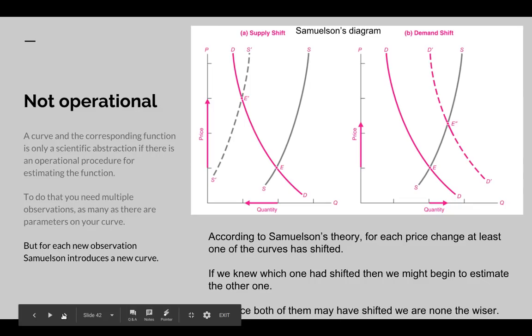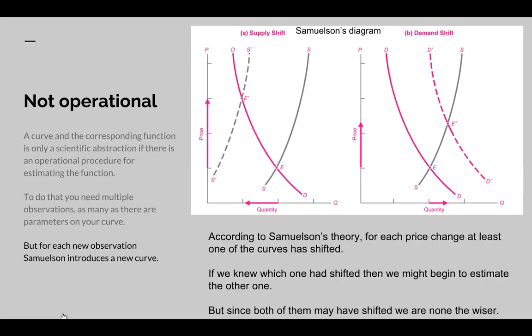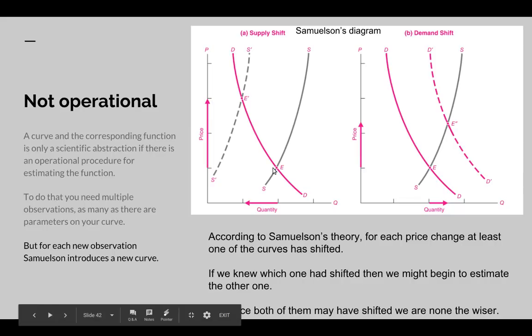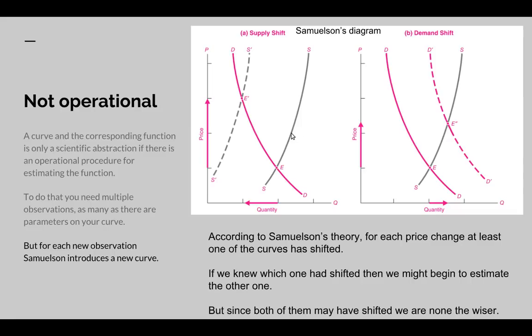Now he has fake observations on these diagrams, because it's not operational. According to Samuelson, whenever prices actually change, the curves shift. So his theory of changing prices is that here we have the original supply curve, and the supply curve moves to the right, and we get a new price. Or in this case, the supply curve moves to the left, and the demand curve moves to the right. So these new prices are produced by shifts in the curves.